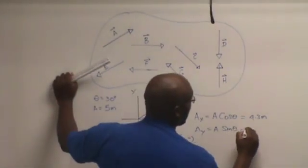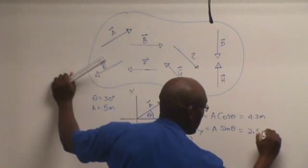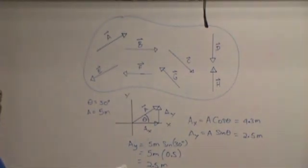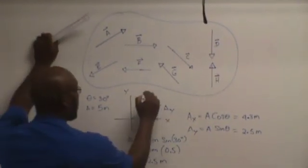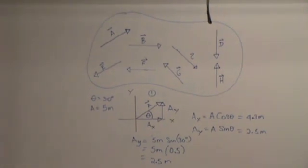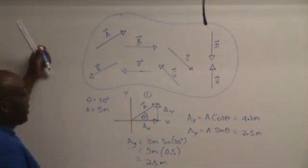So there you have it. We have found the X and Y components for vector A. If you notice, vector A is lying in that first quadrant. So that's it for that example.